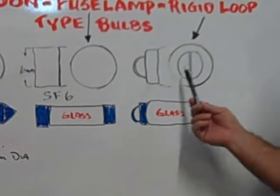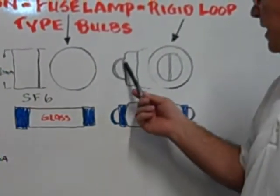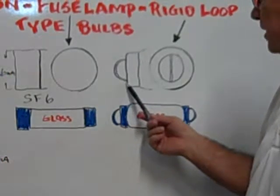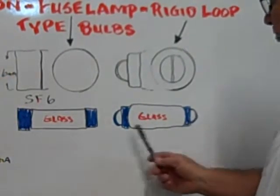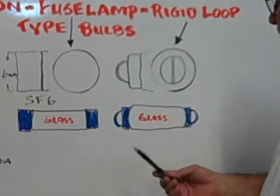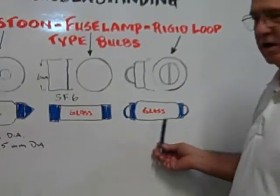And the last one is the Rigid Loop. It has a wire loop that comes out at either end, and in the center of course is the glass tube.